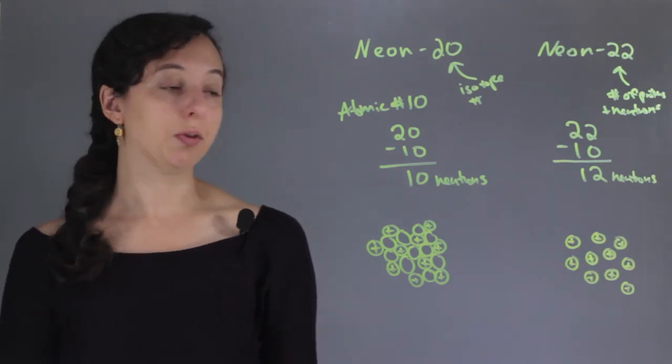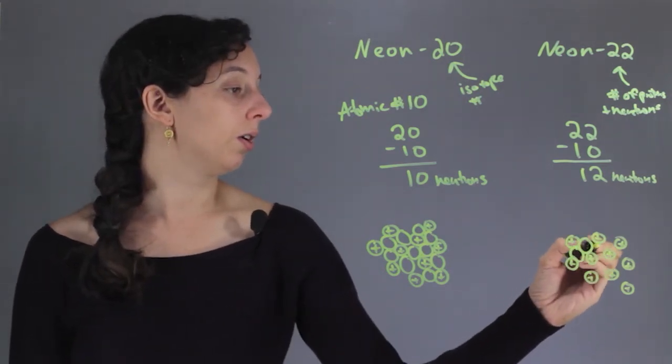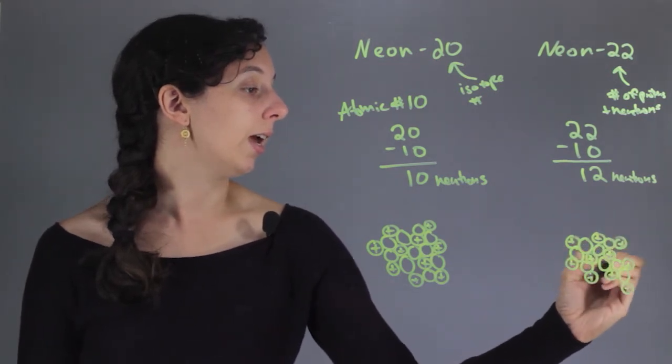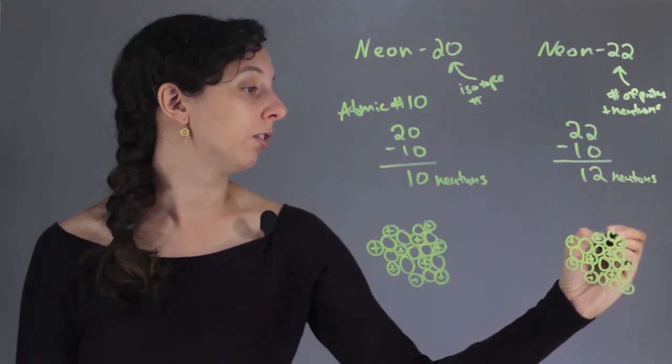And then now we're going to add 12 neutrons. So 1, 2, 3, 4, 5, 6, 7, 8, 9, 10, 11, 12.